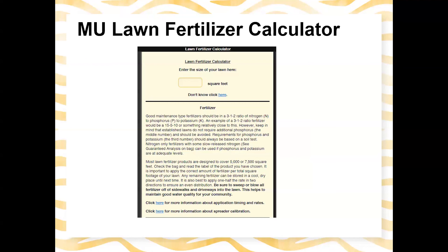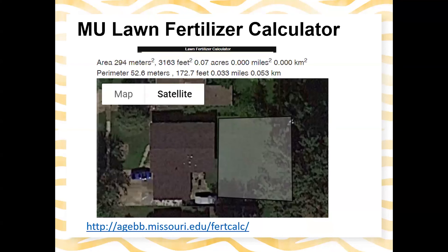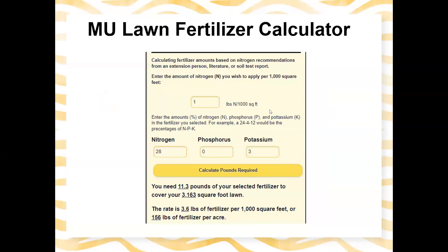We also have a lawn fertilizer calculator. If you don't know the square footage of your lawn, you can click the hyperlink and it will bring up satellite imagery where you can zoom in on your property and draw a box to get the square footage — for instance, the black box shown here is 3,000 square feet. You can also use this calculator: if it says you need one pound of nitrogen per thousand square feet and you have a 28-0-3 green-up lawn fertilizer, you'll need 11.3 pounds to cover 3,000 square feet.